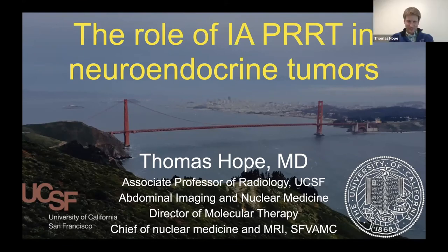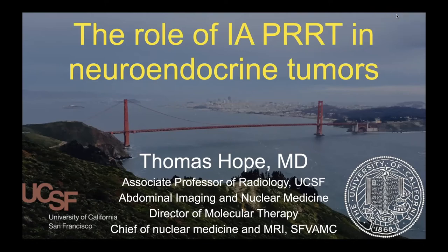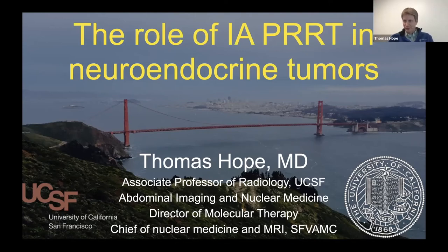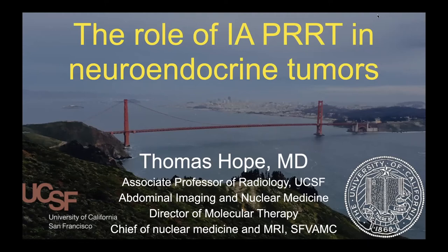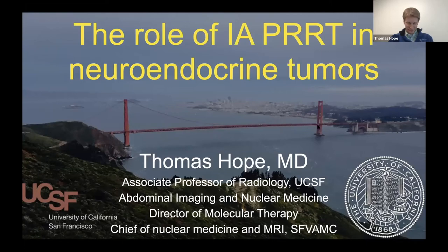Thank you so much, Lauren. It's been really exciting to hear the previous talks about how much has been accomplished, and really highlighting how these grants, which in the big picture are small, can have a huge impact. I received a grant to study intra-arterial PRRT and how it can be used in the setting of neuroendocrine tumors. We use yttrium-90 DOTATOC, which is a different radioligand than lutetium DOTATATE — Y-90 decays by giving off a beta particle, it has a longer path length, so it can be more effective but also potentially more toxic.